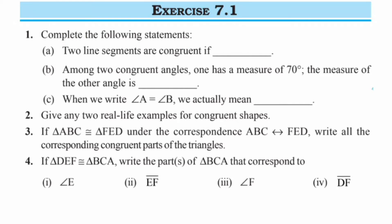They have given three questions. The first one is: two line segments are congruent if — dash. Congruent means when they have the same length, right? Congruent means they have the same thing — similar things — or the same angle or measurement. Since they're talking about the line segment, we'll say that two line segments are congruent if they are of the same length.